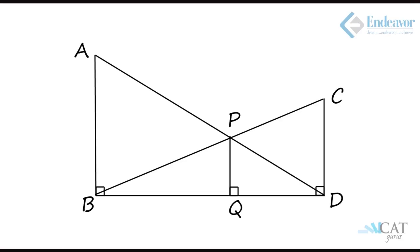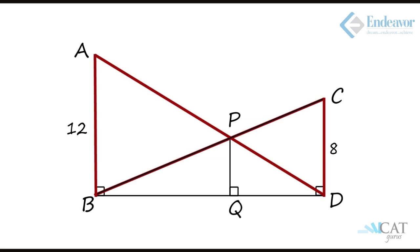Now let us look at a very interesting and challenging question based on the concepts of lines and triangles. In the diagram, AB and CD are parallel lines with base BD and a perpendicular to BD. Lines AD and CB intersect at point P, and we must find the height PQ. AB is 12 and CD is 8. There can be two different approaches. The more conventional approach draws a similarity between triangles APB and CPD using vertically opposite angles at point P, but this is slightly lengthy. Here we have a very useful property: the height PQ is the semi-harmonic mean of AB and CD.